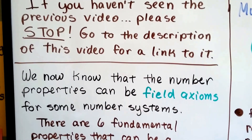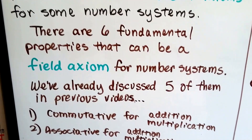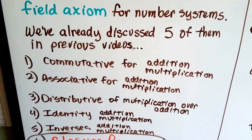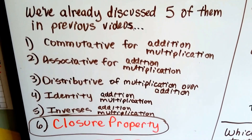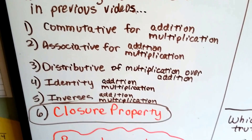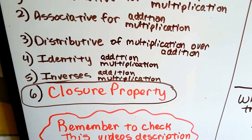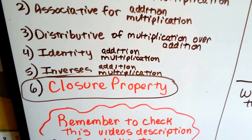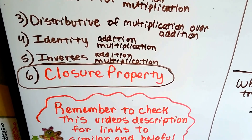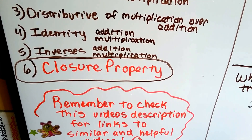We now know that the number properties can be field axioms for some number systems. There are six fundamental properties that can be a field axiom for number systems. We've already discussed five of them in previous videos: the commutative property for addition and multiplication, the associative property for addition and for multiplication, the distributive property of multiplication over addition, the identity property of addition and multiplication, and the inverse properties for addition and multiplication. And now we're going to introduce the closure property.